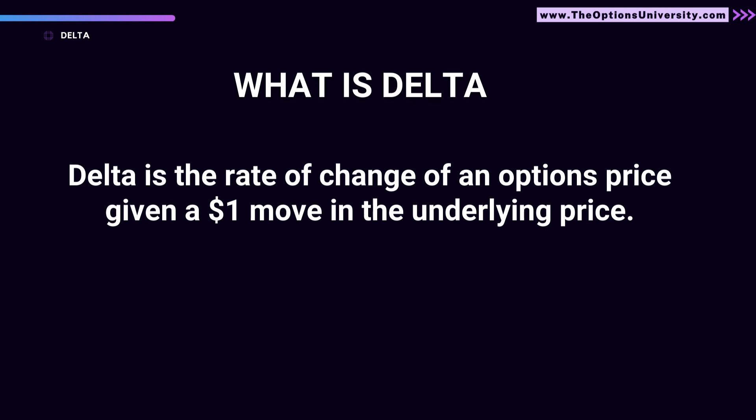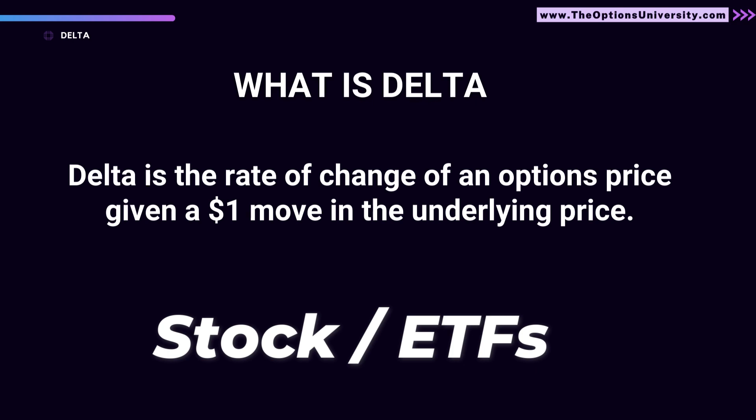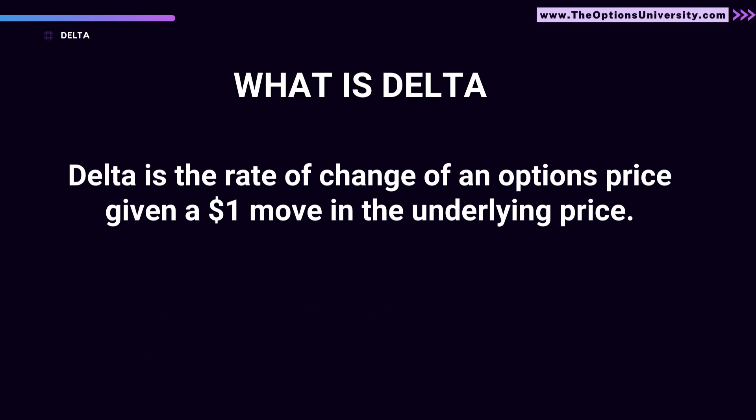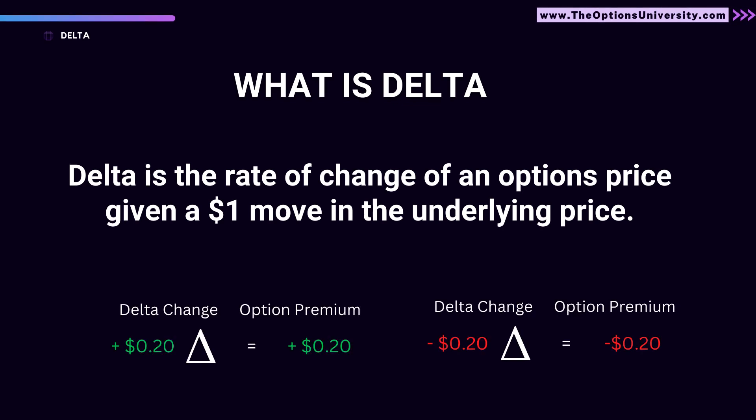So, what is delta? Delta is the rate of change of an option's price given a one-dollar move in the underlying price — the underlying could be a stock, ETF, or anything. As the stock moves by a dollar, how much the option premium moves is decided by the delta value. For example, if the delta is 0.20, your option premium would increase or decrease by 0.20 for each one-dollar move.